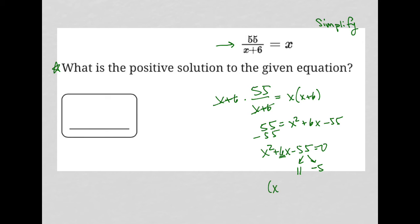So the factored form of this trinomial would be x plus 11, x minus 5 equals 0.